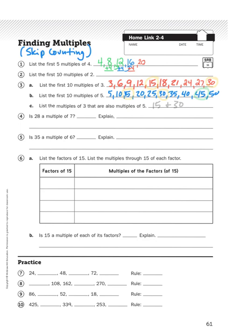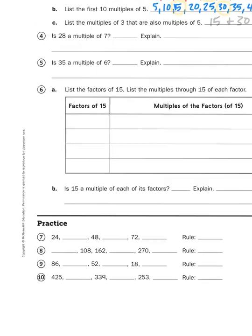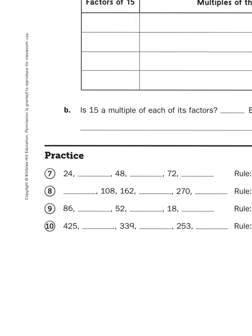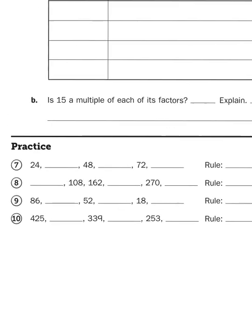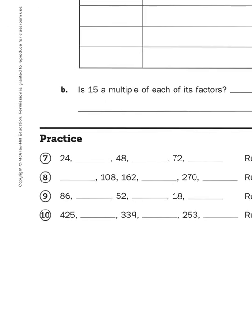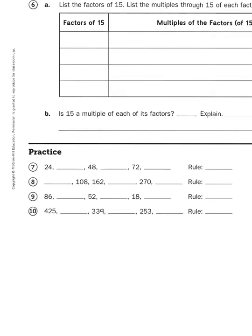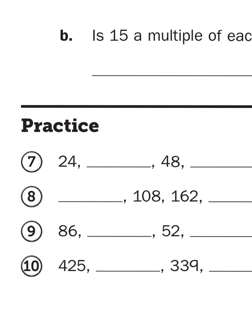Now the last thing I want to do is I want to look at the numbers down at the bottom, the practice problems. These are some number rule problems. So I start with the number 24 and then I have a blank, and then I have a number 48, and then I have a blank, and then I have 72. So again, this is basically a skip counting problem.